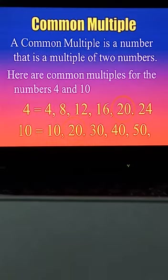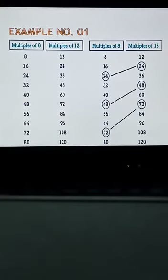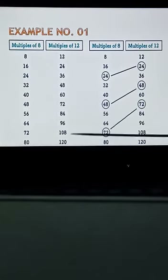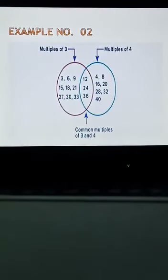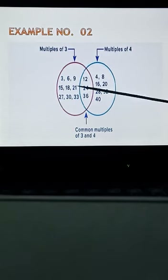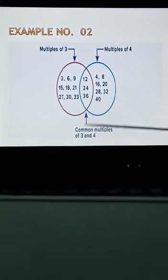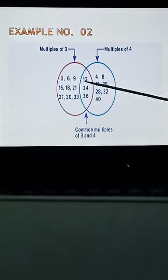So 20 is the common multiple of 4 and 10. In the next example, the two numbers are 8 and 12, and the multiples of 8 and 12 are listed. In example two, you can observe the multiples of 4 and 3 shown in two circles, and in the center the common multiples are marked: 12, 24, and 36. So 12, 24, and 36 are the common multiples of 3 and 4.